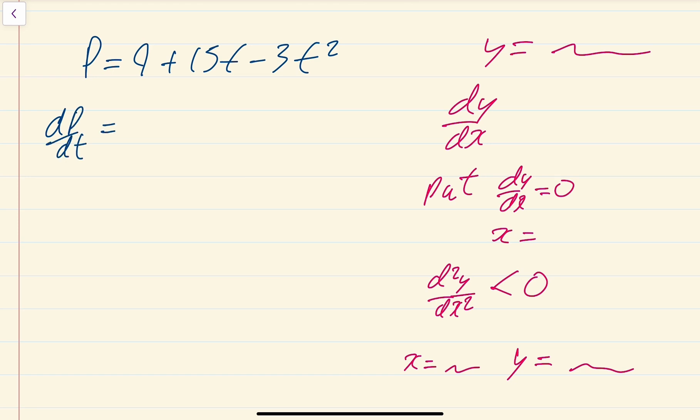Differentiate P with respect to t to get dp/dt = 15 - 6t. This is my second time doing this because I differentiated incorrectly a minute ago, so be careful. Put dp/dt equal to zero, which means 0 = 15 - 6t, so 6t = 15.